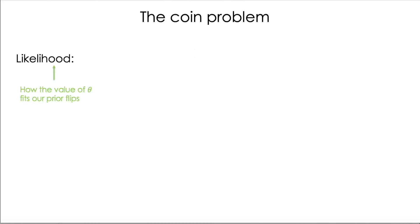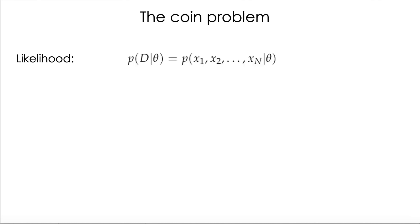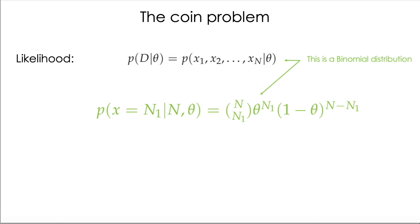Let's start with the likelihood. Recall that the likelihood measures how well the value of the parameters fits our data — in other words, our prior flips. We express it as the probability of the data given the model, where the model is theta (our parameter) and the data are n flips. So I want to calculate the probability of having this history of flips — some heads, some tails. The idea is to calculate the probability of that combination, and if we count n1 heads, this is exactly a binomial distribution.